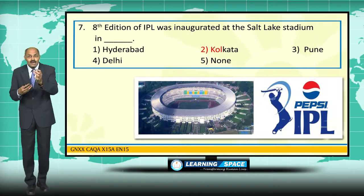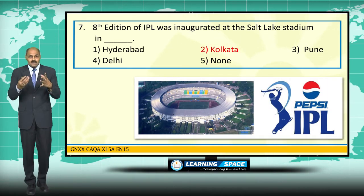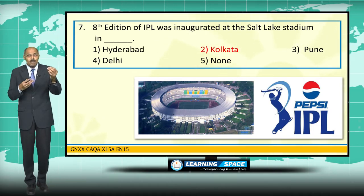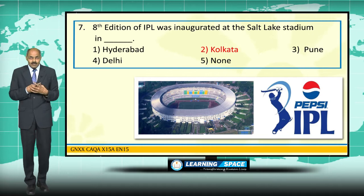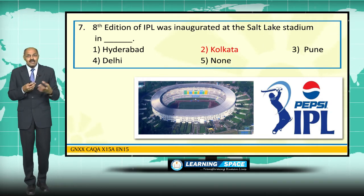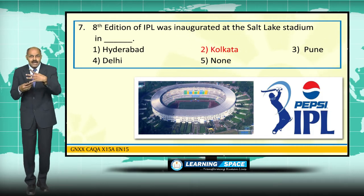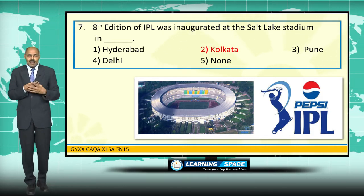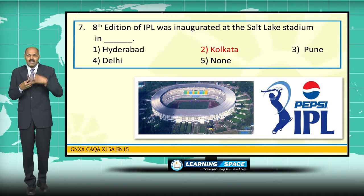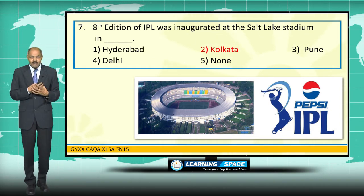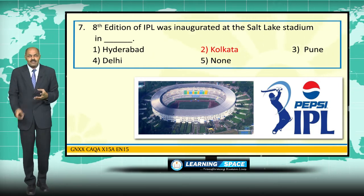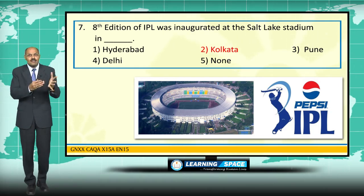The eighth edition of the Indian Premier League, sponsored by Pepsi, was inaugurated at Salt Lake Stadium in Kolkata in the presence of Hrithik Roshan, Farhan Akhtar, Anushka Sharma, and several others. The cricket season this season will last for around 45 days.